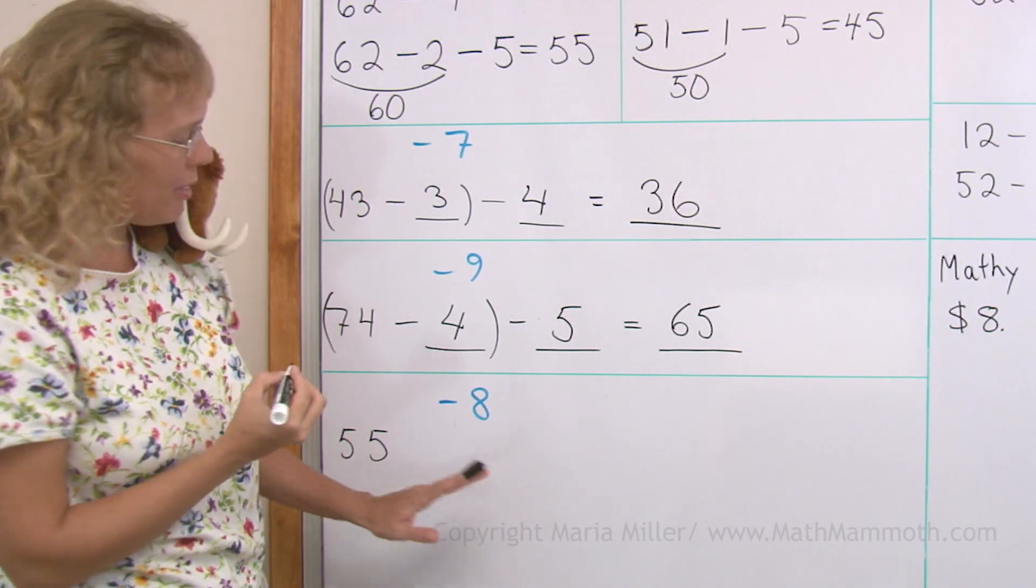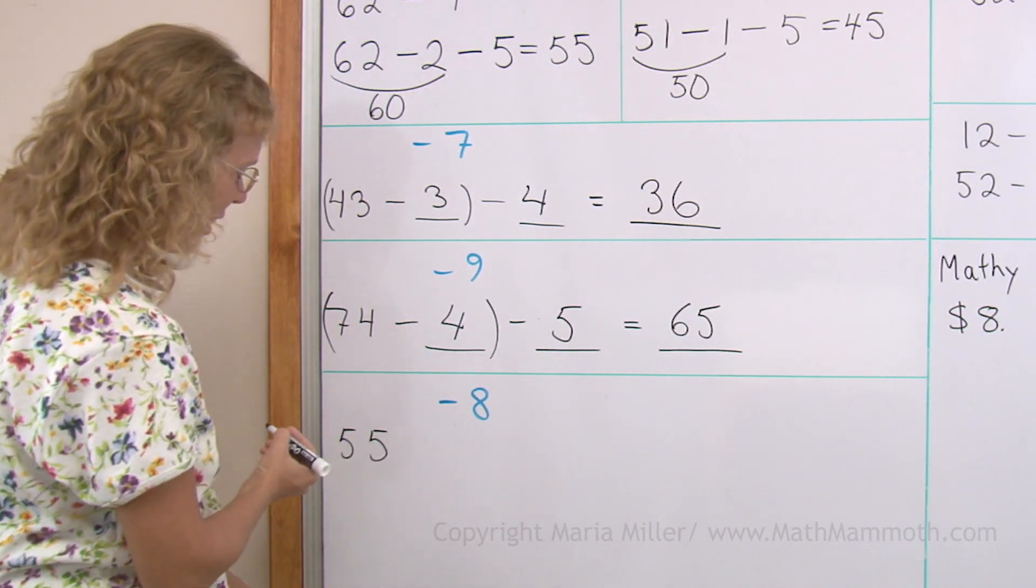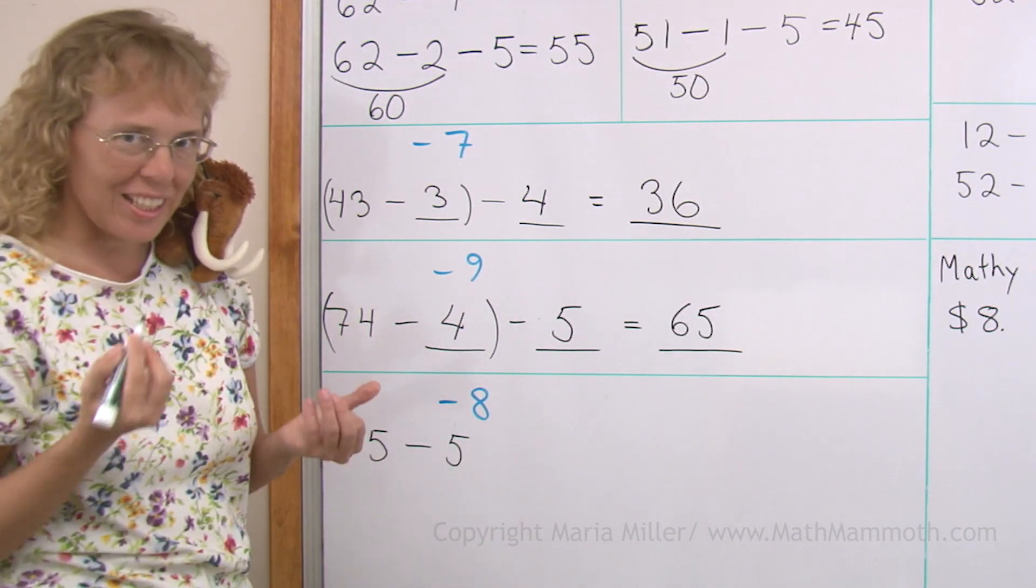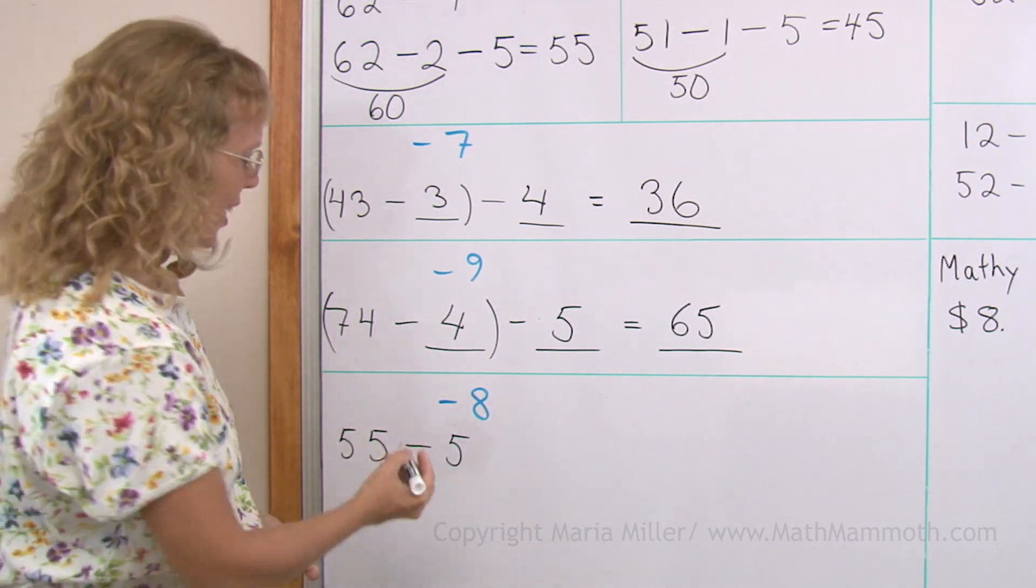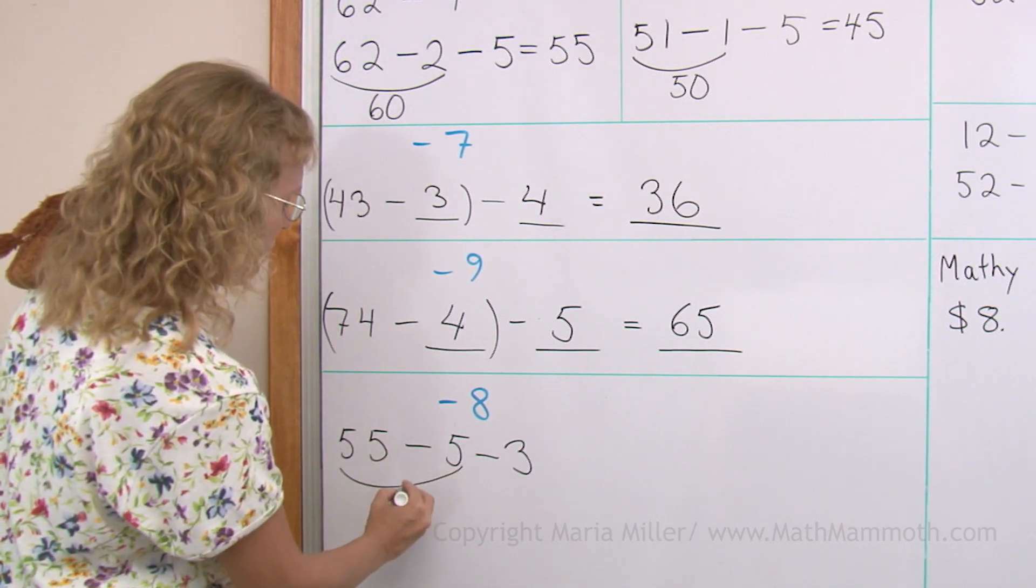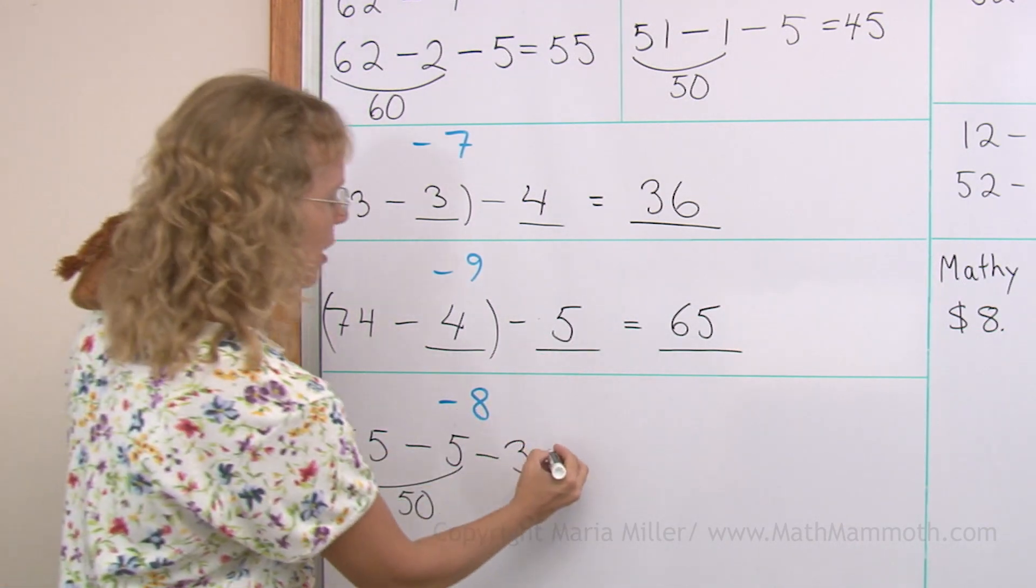And our last one, 55 minus 8. First we subtract 5 because that leaves 50, the whole 10. And then 3 more. This here makes 50. 50 minus 3 is 47.